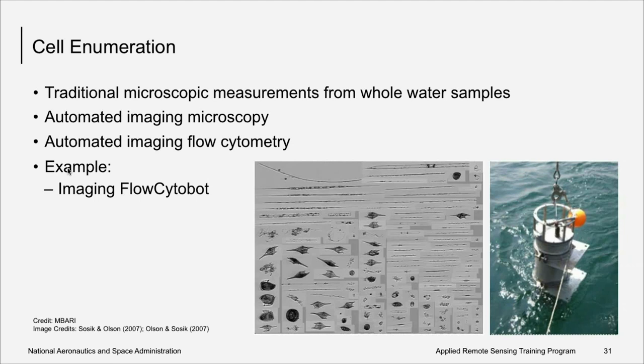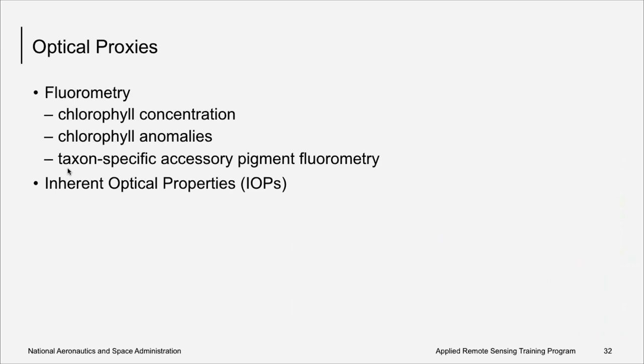Another approach to monitor for algal blooms, not specifically harmful ones, is to use fluorometry. Algae contain chlorophyll and other accessory pigments associated with the light reactions of photosynthesis. Accessory pigments can be diagnostic of particular taxonomic groups. Chlorophyll and these accessory pigments absorb light and re-emit a small proportion of it at lower energy wavelength through a process known as fluorescence. Fluorometry is used as a method to estimate chlorophyll concentration and accessory pigment concentration. Chlorophyll concentration can be used to identify the presence of algae. Chlorophyll anomalies are used to signal a sudden increase in chlorophyll or an algal bloom. And diagnostic pigments can provide information on which algal taxonomic groups are present in the water. The scattering and absorbing characteristics or inherent optical properties of the phytoplankton can also be used to shed light on which taxonomic groups are present.